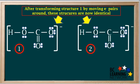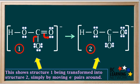We have now transformed structure 1 so it is identical to structure 2, simply by moving electron pairs around without changing the positions of any atoms. This transformation can be represented by showing electron pairs moving in structure 1 as it is transformed into structure 2.